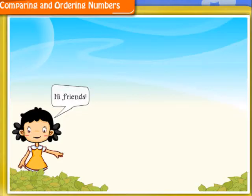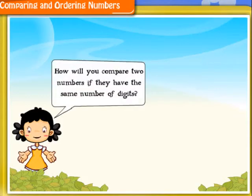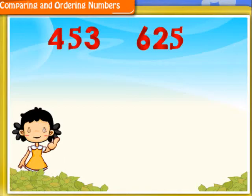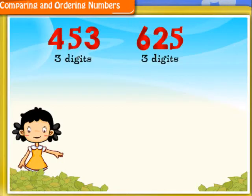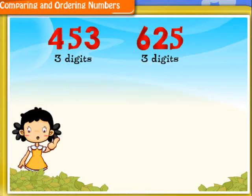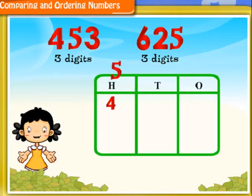Hi friends. How will you compare two numbers if they have the same number of digits? Here the number of digits are the same, so these numbers cannot be compared by simply counting the number of digits. In order to find the greater of the two, I write both the numbers in the place value table.